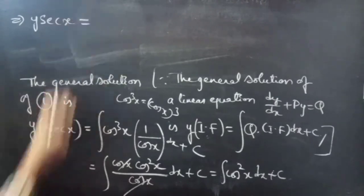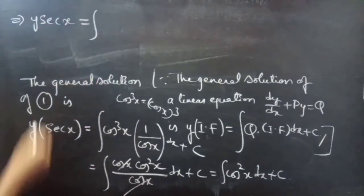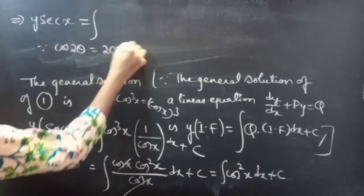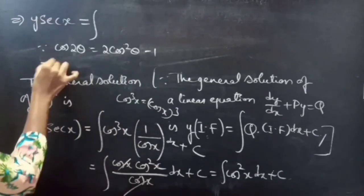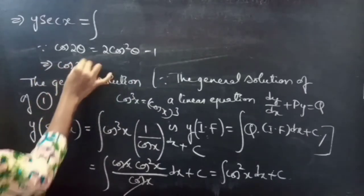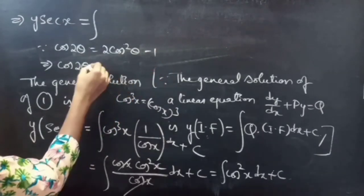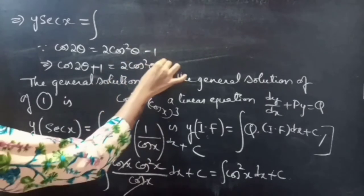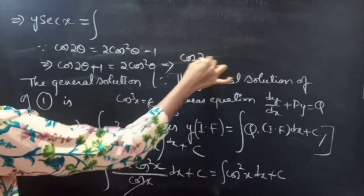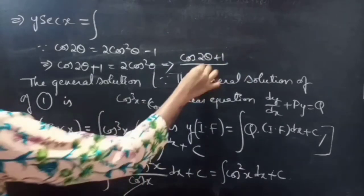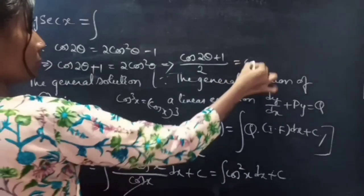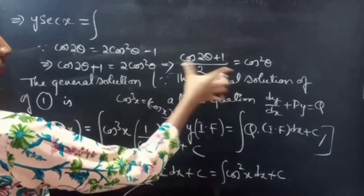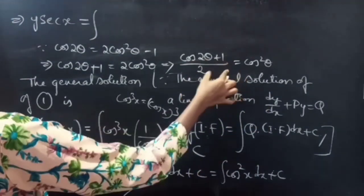Then y·sec x equals the integral of cos²x dx plus C. We know that cos 2θ equals 2cos²θ minus 1, so rearranging gives cos²θ equals (1 + cos 2θ)/2. We can replace cos²x by (1 + cos 2x)/2.